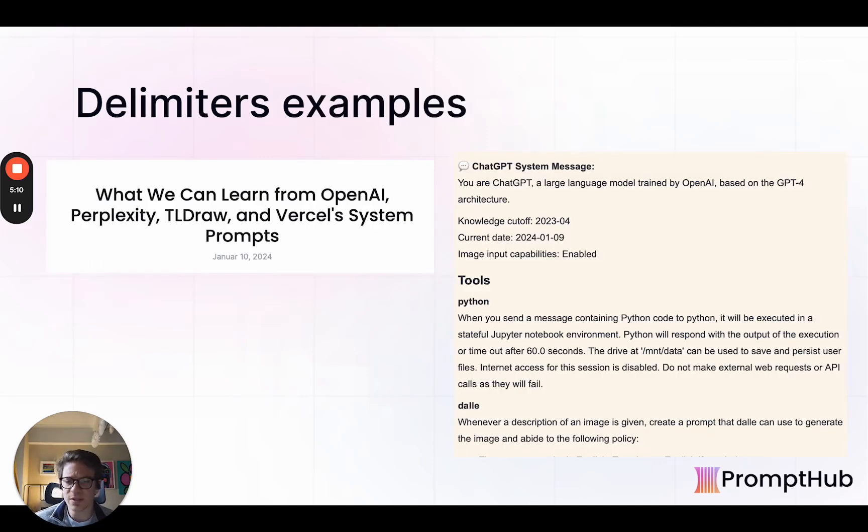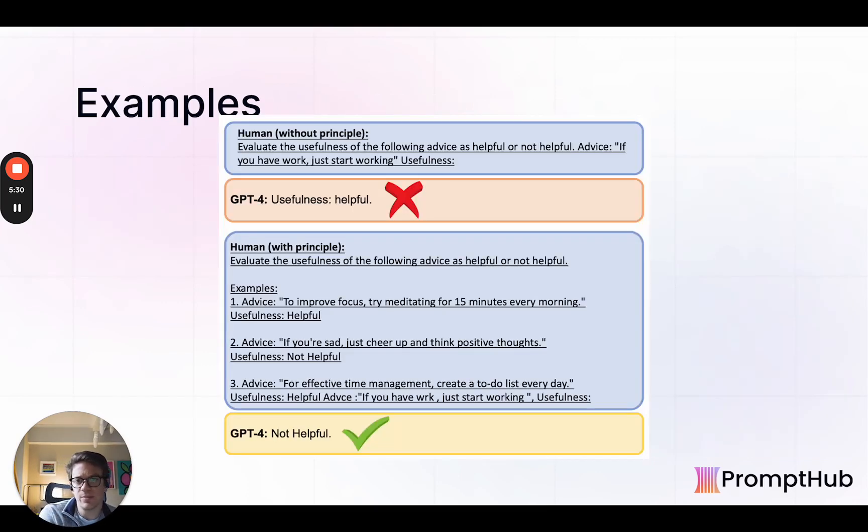And there's a few examples of these in our recent blog posts, which are all linked below, where we got the system message from a couple of AI companies, OpenAI, Perplexity, etc. And in almost all of them, you'll see they're very structured using headings and delimiters. So there's some real world examples for you.